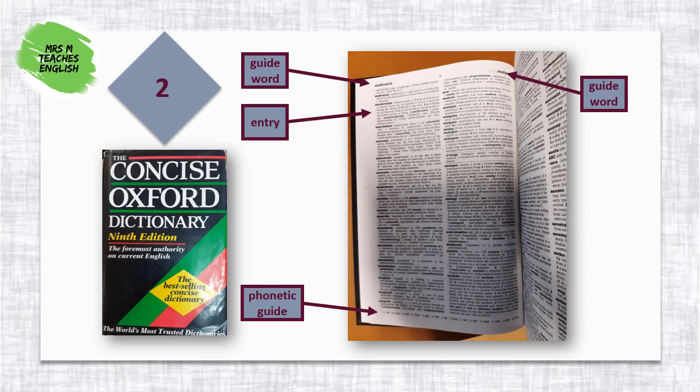Or you could use your book dictionary — my faithful Oxford Dictionary, or OED, as it is referred to in most documents. To find anachronism, I look up the word in its alphabetical order. The two words at the top of the page are the guide words, showing the first and last words on this page: a branch on the left, and analysis bottom right. The word I am looking for is on the left between these two guide words. At the bottom of the page you will see some seemingly unrelated words — these are a guide to the phonetics of the words on this page, showing us how to pronounce the different sounds.